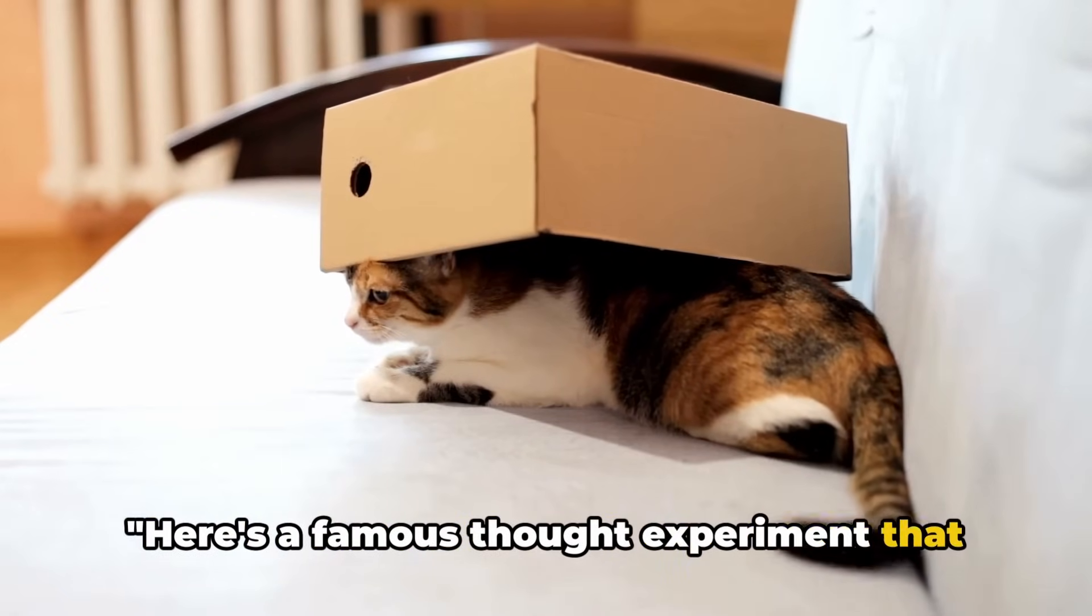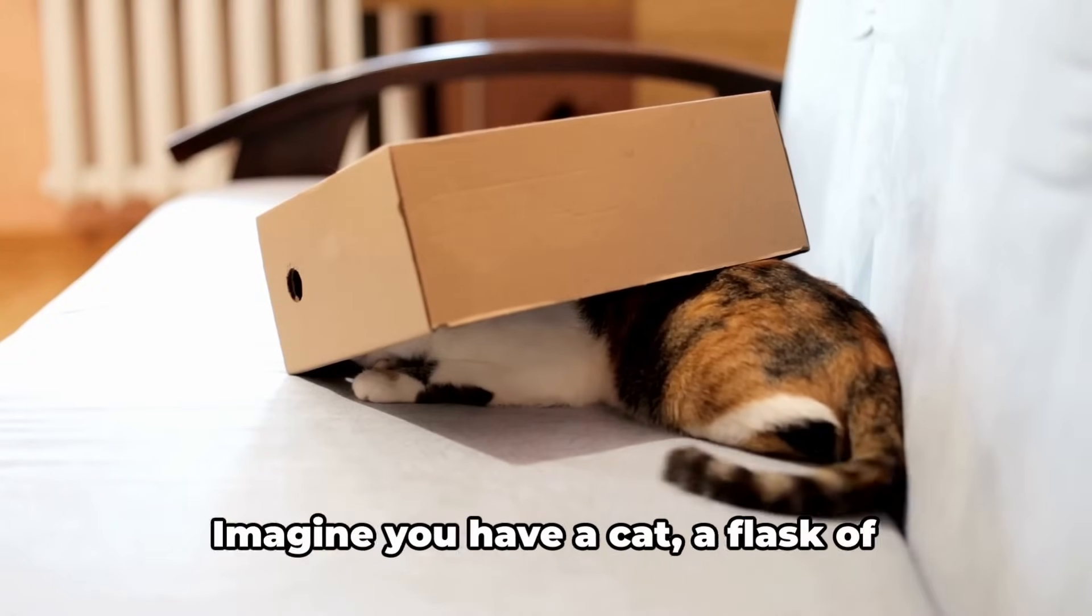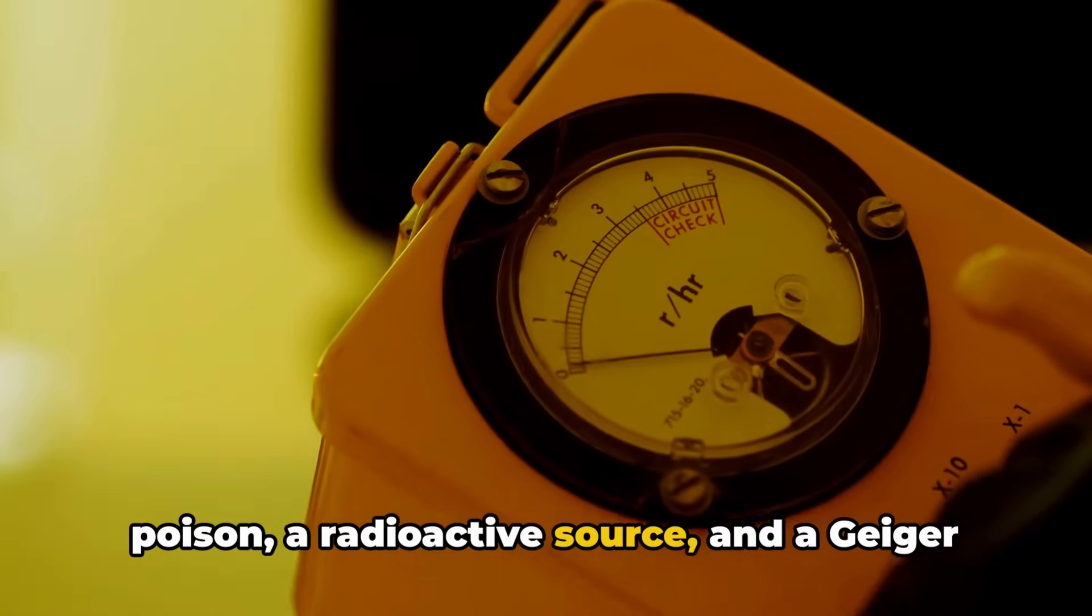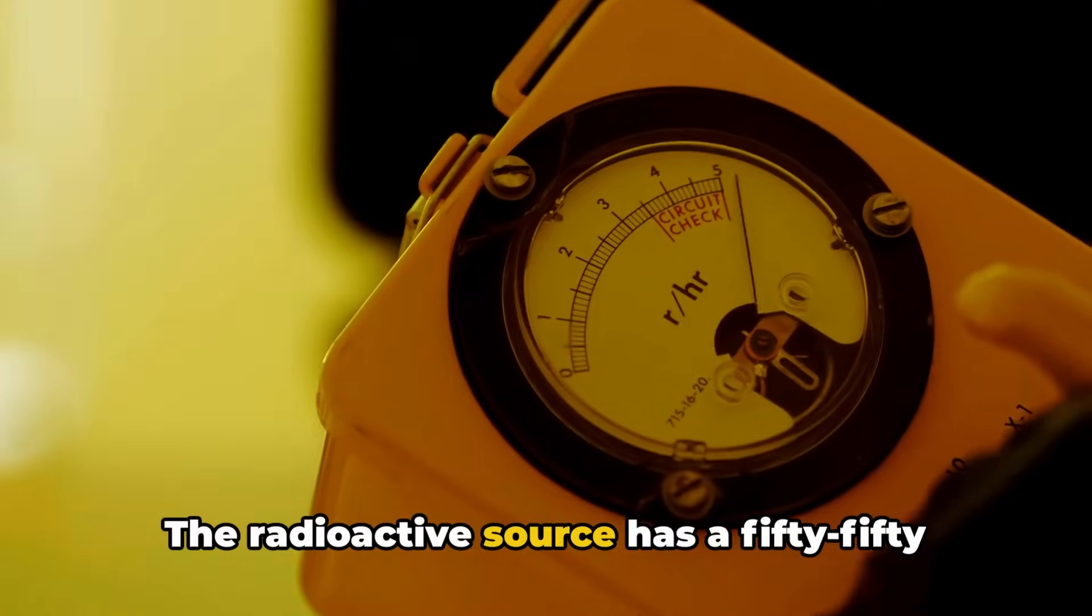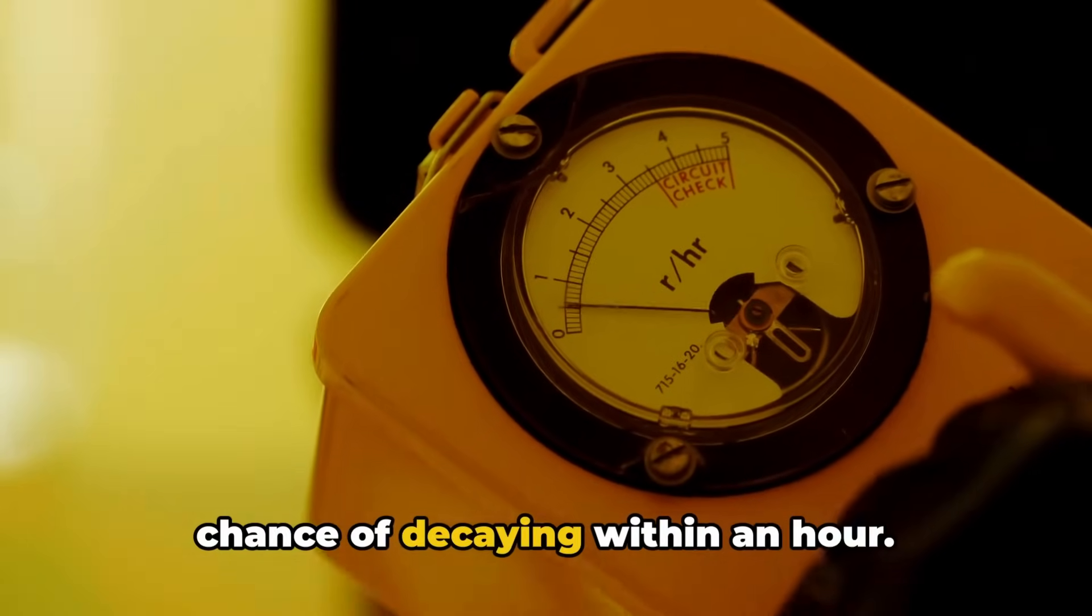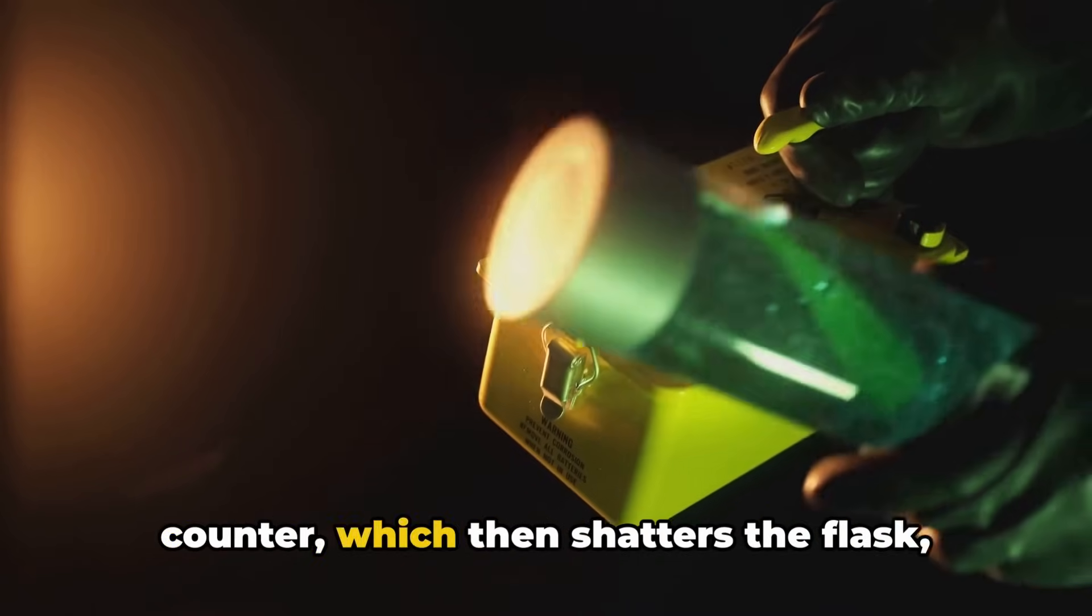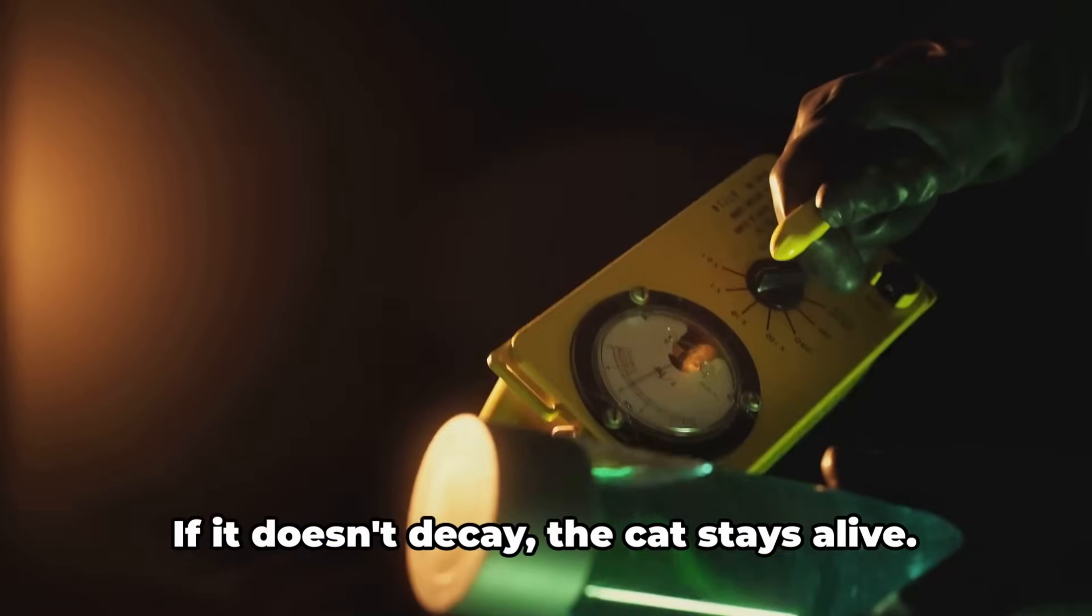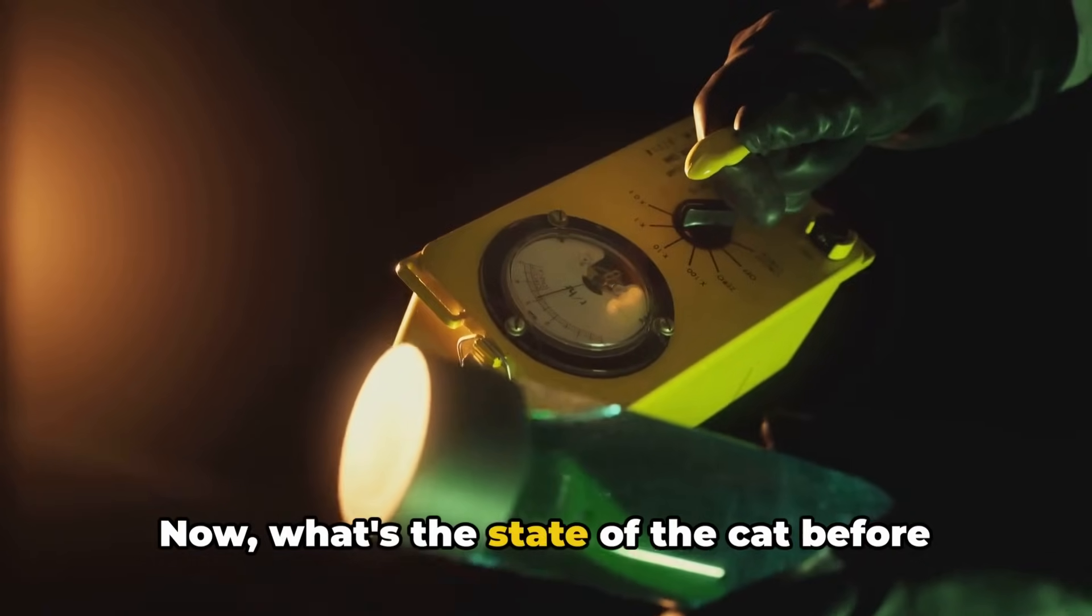Here's a famous thought experiment that stumped even the greatest minds: Schrödinger's cat. Imagine you have a cat, a flask of poison, a radioactive source, and a Geiger counter inside a sealed box. The radioactive source has a 50-50 chance of decaying within an hour. If it decays, it triggers the Geiger counter, which then shatters the flask, releasing the poison and killing the cat. If it doesn't decay, the cat stays alive.